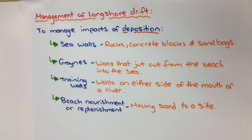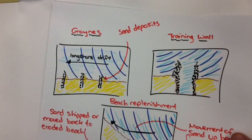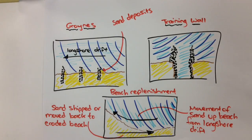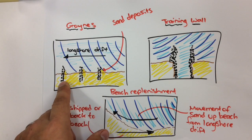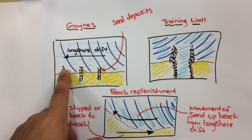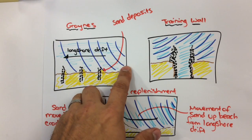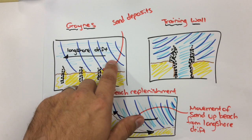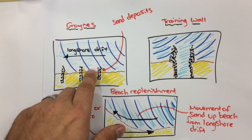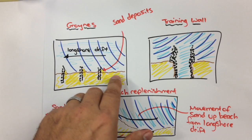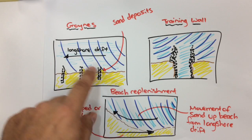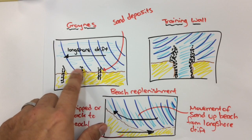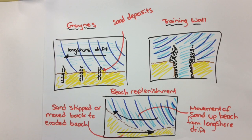Here we have groins in this image. Groins are sometimes built out of wood, sometimes rocks, and they jut out from the sand into the water. With the process of longshore drift moving sand along, the idea of the groins is to stop or minimize that movement of sand along the beach, so sand builds up at points along the groins.